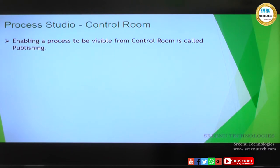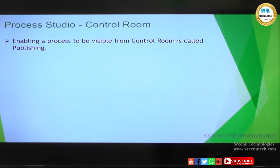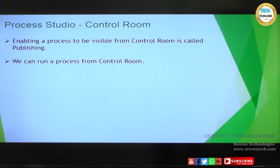A process can be run from the control room. To run a process from control room, it must first be made visible to the control room. We might have 100 processes during development, but only the completed ones should be visible to the control room. This process is called publishing. We will see how to publish a process, then how it is visible from control room, and then how we can run this process from control room — without clicking Go, Step, or Step Over.